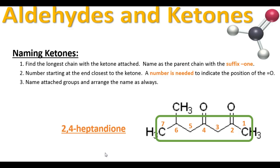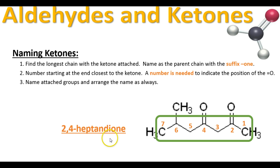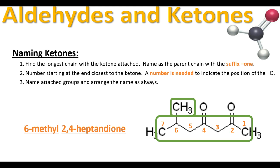We're going to name a slightly more complex ketone. In this case, we have two ketones — one coming off the fourth carbon and one off the second — with seven carbons in the chain, giving us a heptanedione. The prefix 'di' shows there are two ketones. The numbers 2 and 4 show the positions of the ketones. We also have a 6-methyl substituent, so the final name is 6-methyl-2,4-heptanedione.